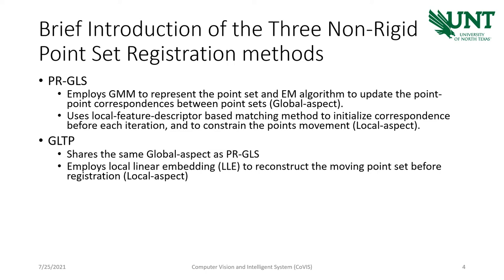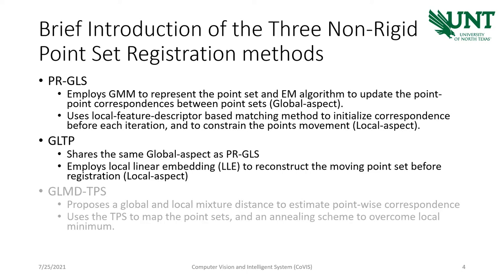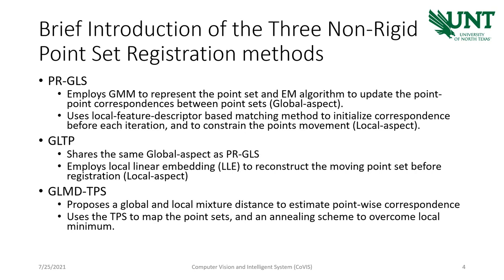The GLTP shares the same global aspect as PR-GLS. However, it employs the local linear embedding method to reconstruct the moving point set before registration, where each point will be represented by its K-nearest neighbors and a set of weights. The GLMD-TPS method proposes a global and local mixer distance to estimate point-wise correspondences, and uses the thin plate spline method to map the point-sets. A nil-link scheme is used to overcome local minimum as well.